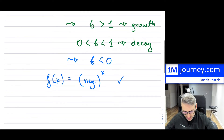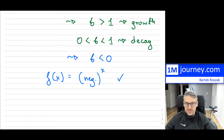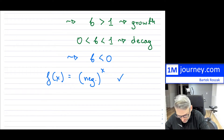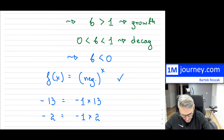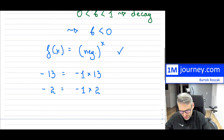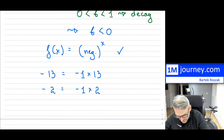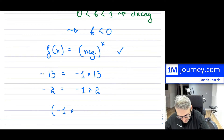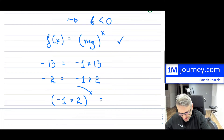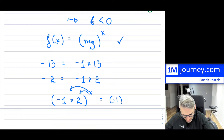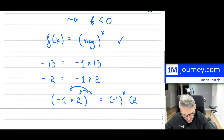We cannot. If you take any negative number — say, minus 13 — that's just negative 1 multiplied by 13. If you take, say, negative 2, it's negative 1 times 2. If you wanted to take the exponent of this, so negative 2 to the x, you'd have negative 1 raised to x multiplied by 2 raised to x.